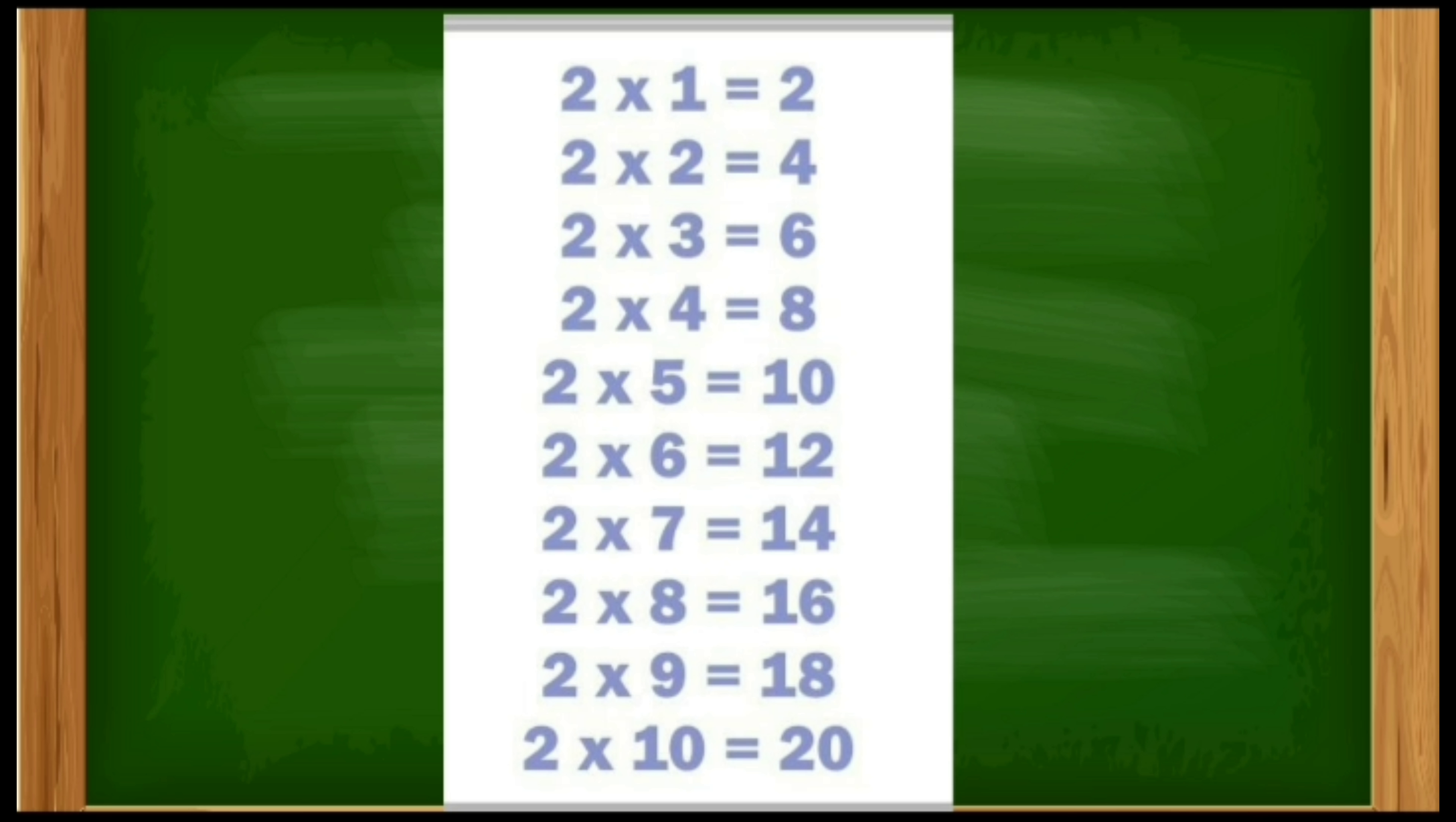Two, then four, then six, then eight, then ten, then twelve, then fourteen, then sixteen, then eighteen, then twenty. So you never gonna miss this. You always remember this. Two multiplication table means the difference is two.